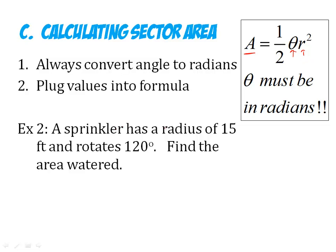Alright, so look at this. A sprinkler has a radius of 15 feet and rotates 120 degrees. So here's my roughly 120 degrees. And my radius is 15 feet. I want to know what is the area of that slice of pie. So the first thing I have to do is convert my 120 degrees to radians. Multiply that, 120 pi over 180. Reduce that, I get 2 pi over 3. That's my theta.